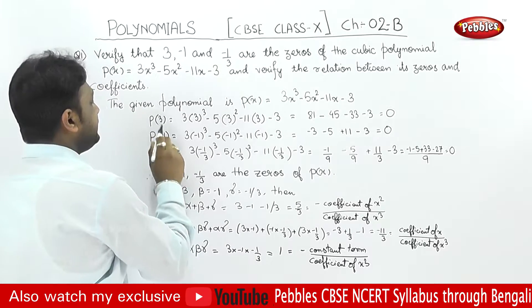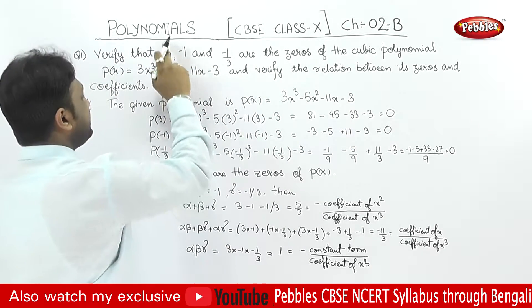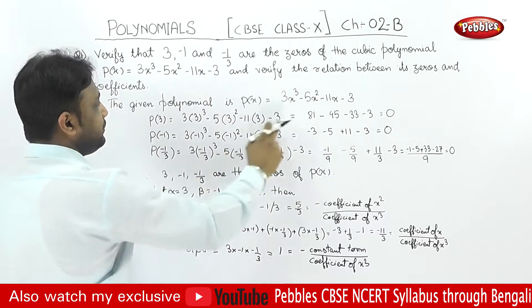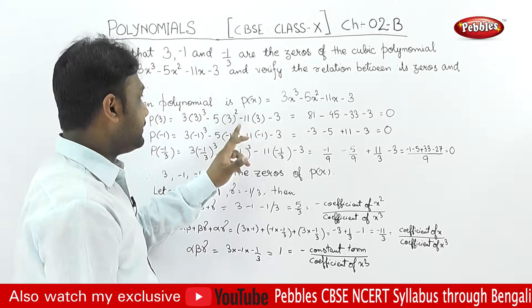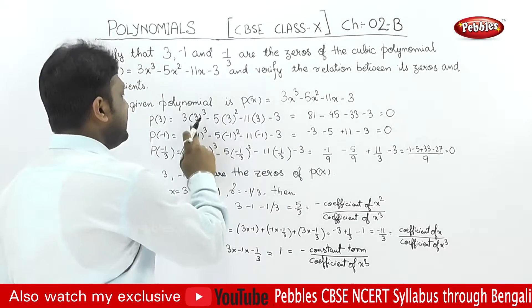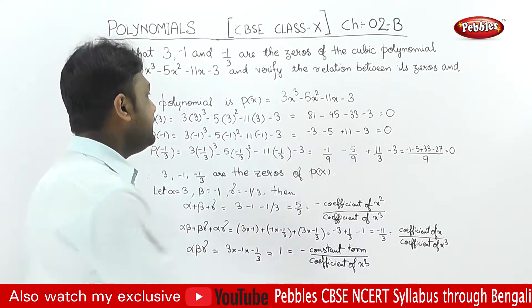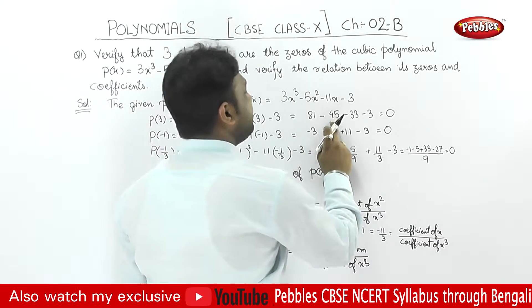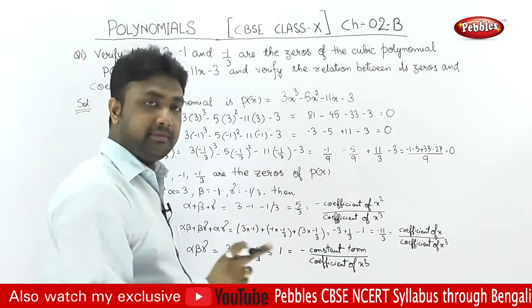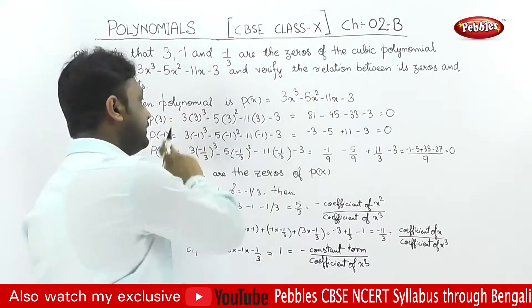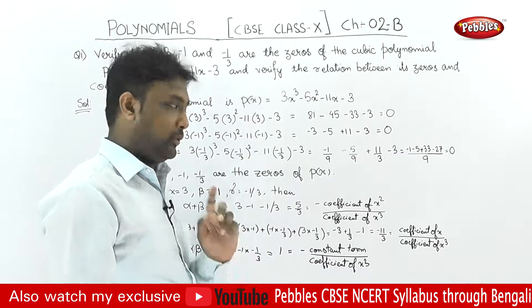For x equals 3: P of 3 equals 3 into 3 cube minus 5 into 3 square minus 11 into 3 minus 3. That is 3 into 27 minus 5 into 9 minus 33 minus 3, which equals 81 minus 45 minus 33 minus 3, equals 81 minus 81, equals 0.